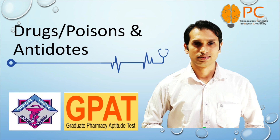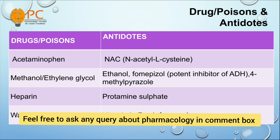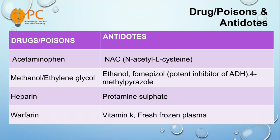So let's start the topic. First is acetaminophen, and its antidote is NAC, means N-acetyl-L-cysteine. And for methanol or ethylene glycol poisoning, we can use ethanol. Fomepizole is a potent inhibitor of ADH, means aldehyde dehydrogenase enzyme.